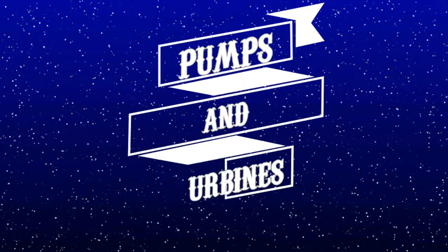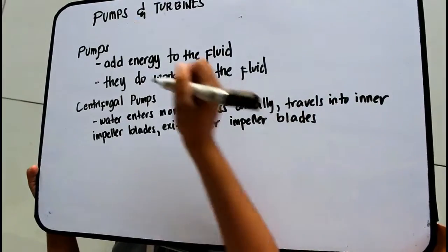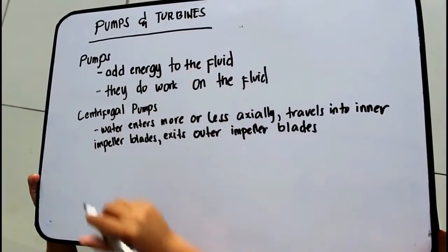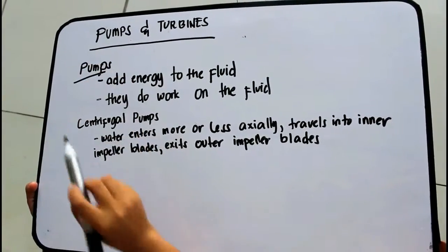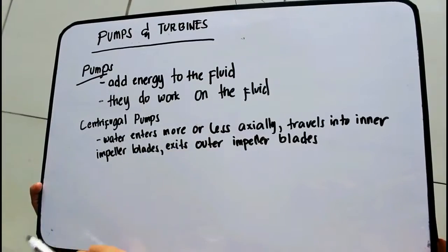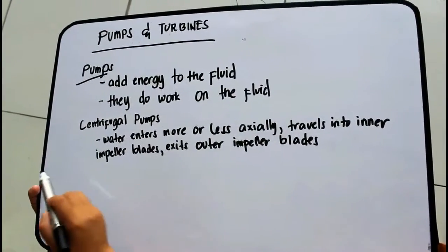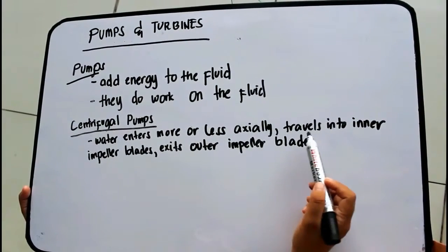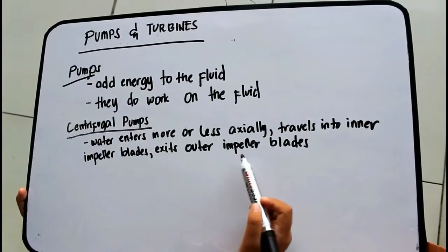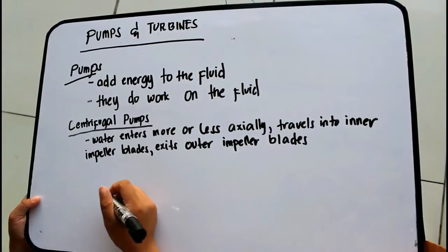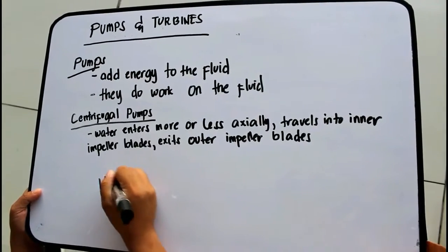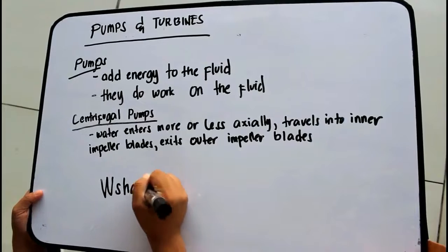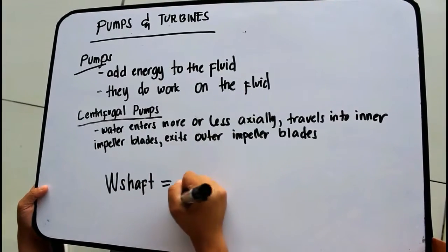Good day, now we will be having a tutorial video on two topics: pumps and turbines. Let's start with pumps. Pumps add energy to the fluid — they do work on the fluid. In centrifugal pumps, water enters the inner impeller blades and exits the outer impeller blades. The formula is: W-shaft equals density times gravity times Q times Hi.